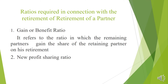The ratios required in connection with the retirement of a partner are three. Under admission of a partner, the three ratios are old profit sharing ratio, sacrifice ratio, and new profit sharing ratio. Similarly, under retirement of a partner, there are also three ratios. The first is old profit sharing ratio, the second is new profit sharing ratio, and the third — in place of sacrifice ratio — is the gain ratio, also called benefit ratio.